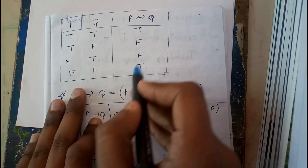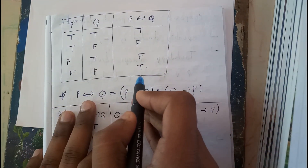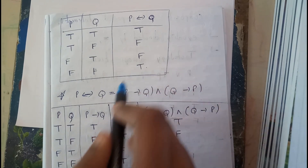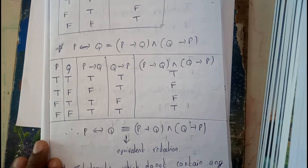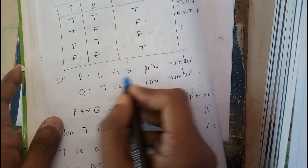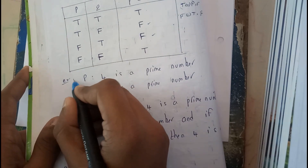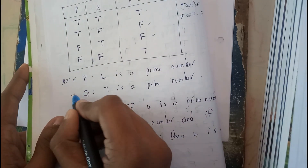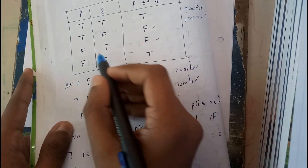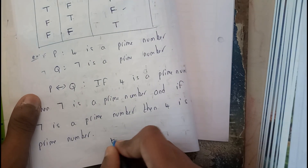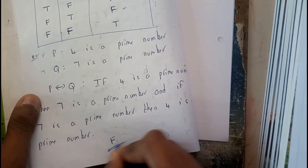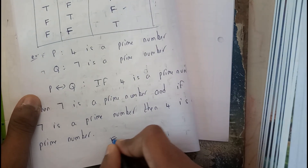Let us see the truth table. The initial value is false and the next one is true, so for F and T we get the final result as false. I hope you are clear with this example.